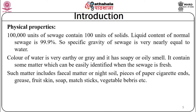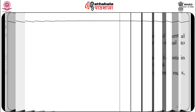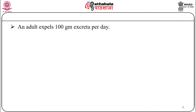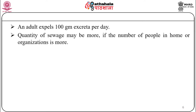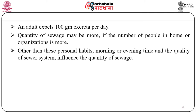Identifiable matter in fresh sewage includes fecal matter or night soil, pieces of paper, cigarettes, grease, fruit cans, soap, matchsticks, vegetable debris. An adult on average excretes 100 grams per day. The quantity of sewage may be more if the number of people in a home or organization is more. Personal habits, time of day, and the quality of the sewage system also influence the quantity of sewage.